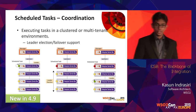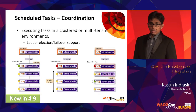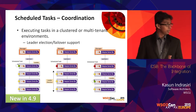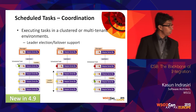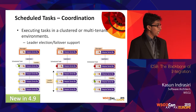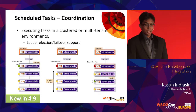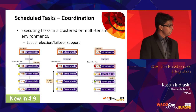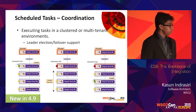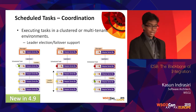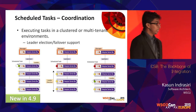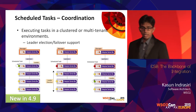We also improved coordination support for scheduled tasks. In ESB, you can have scheduled tasks running based on a given interval or a cron job. With coordination support, you can ensure that a given task is executed on a specific ESB cluster node, and if that node is not available, a new task will spawn on one of the other worker nodes. This allows failover support for scheduled tasks, which was not available in previous releases.